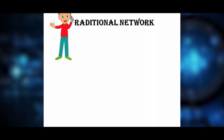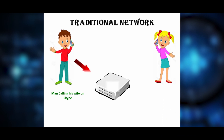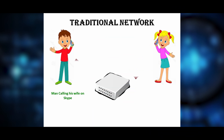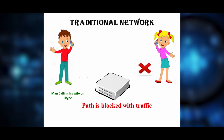Let us see the traditional way of networking. When a man is calling his wife through a Skype call, the switch or router checks the receiver's IP address in the routing table. Once it finds the IP address, the call gets connected to his wife and packets start to transfer. After some time, the router cannot process the incoming packets because of traffic, so the path gets blocked and the call gets disconnected.